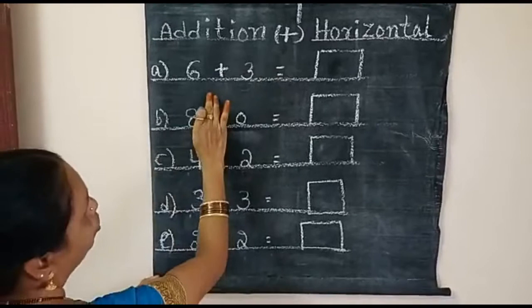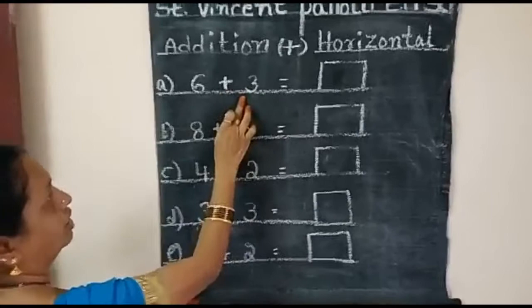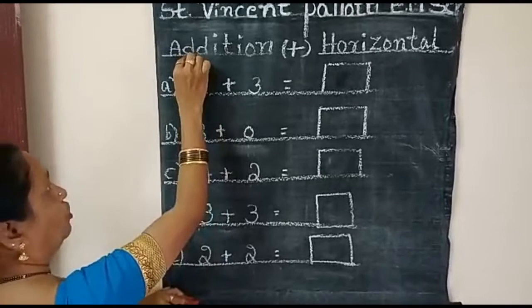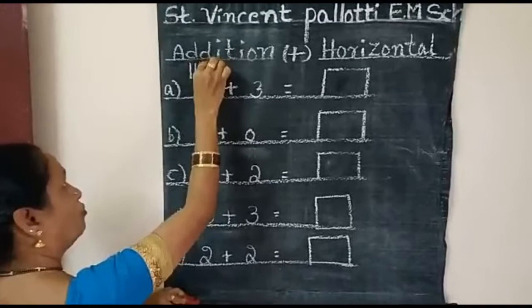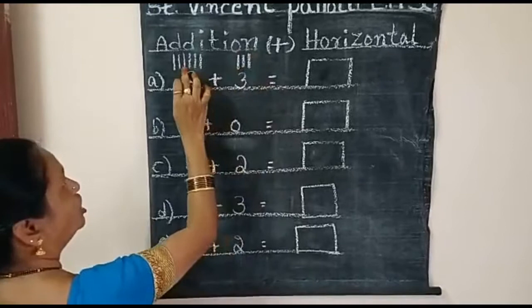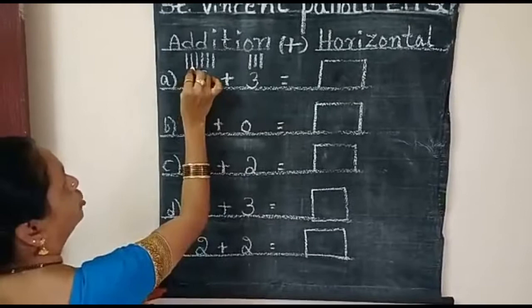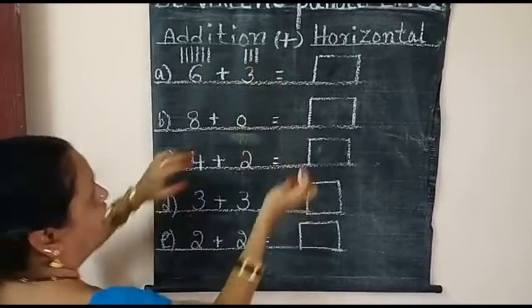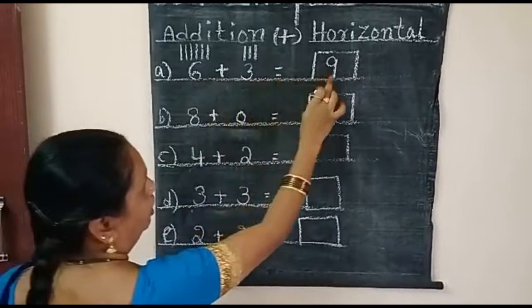Six plus three. How to do this? What number is this? Here six. So you will draw six lines: one, two, three, four, five, six. Here three. Draw three lines: one, two, three. Now these six lines and these three lines — add. See count: one, two, three, four, five, six, seven, eight, nine. Here answer is nine. Six plus three is equal to nine.